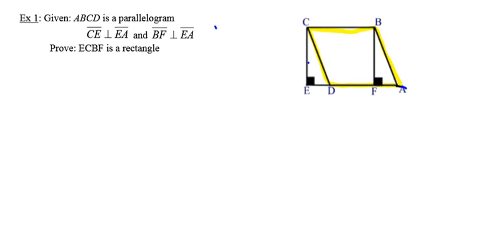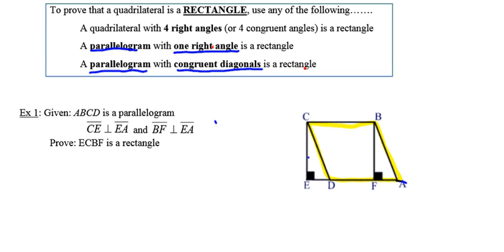Scrolling back to the top, I have three options to prove that something's a rectangle. I can show that it has four right angles — looking halfway decent since I already have some right angles in the picture. I can show that it's a parallelogram with one right angle, which also looks promising. Option three is to show it's a parallelogram with congruent diagonals, but figure ECBF has no diagonals drawn in. So since there are no diagonals, my best option is one of the other two.